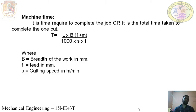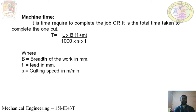Next, the machining time — the calculation of machining time. It is the time required to machine or complete one job, or the total time taken to complete one cut. It is given by the formula: T equals L into B, multiplied by (1 plus M), divided by (1000 × S × M).